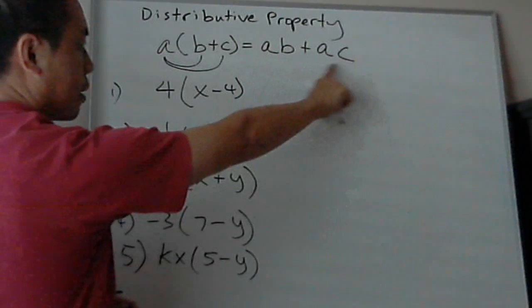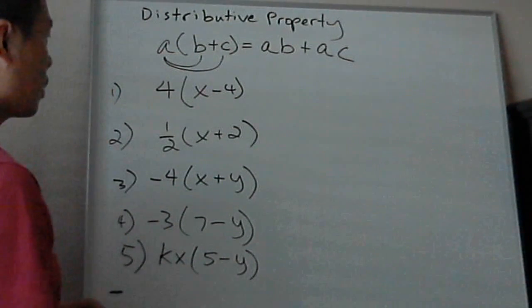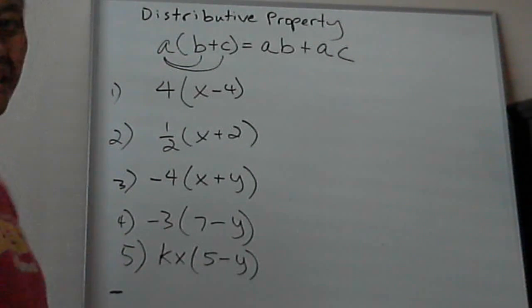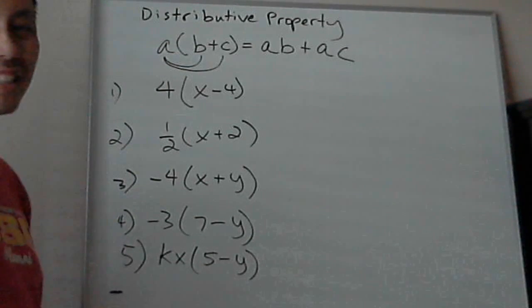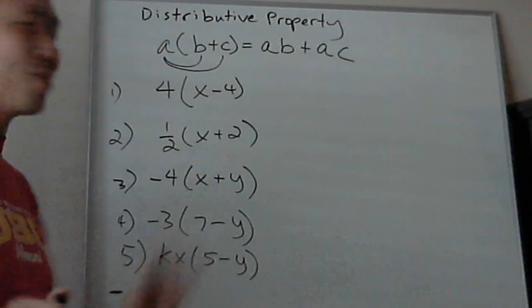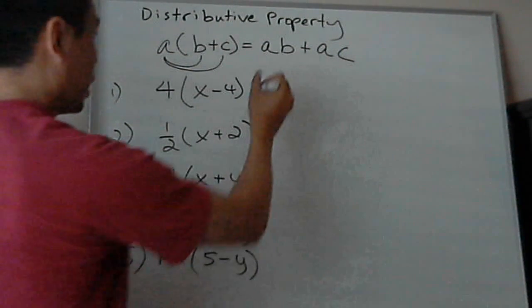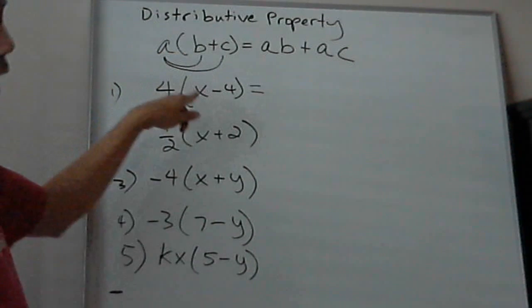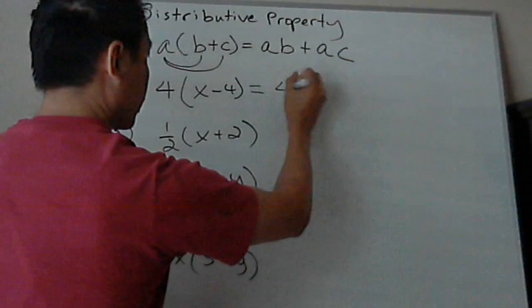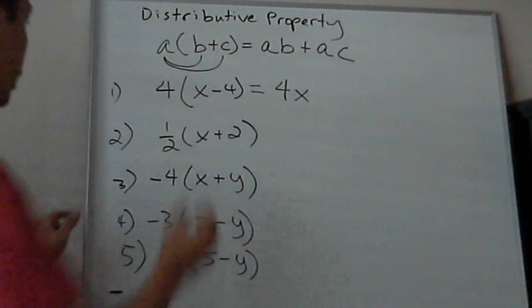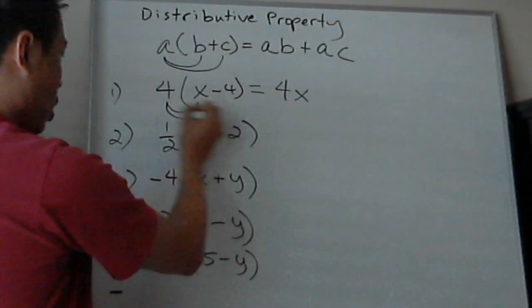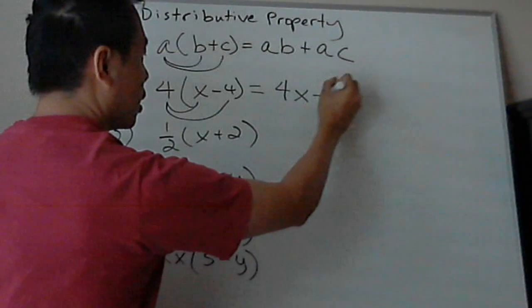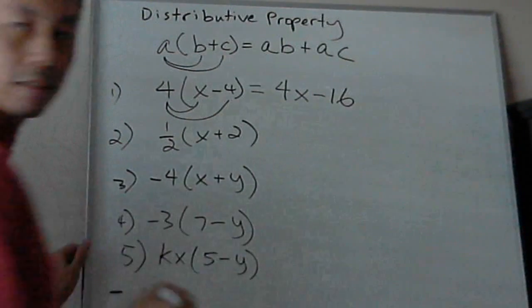Let's do example number one - it'll become more clear. I know some people aren't familiar when they see letters and variables, but you'll start understanding what this means. First rule is this number times this number: 4 times x is 4x, right? And next, 4 times negative 4 is negative 16. That's it.